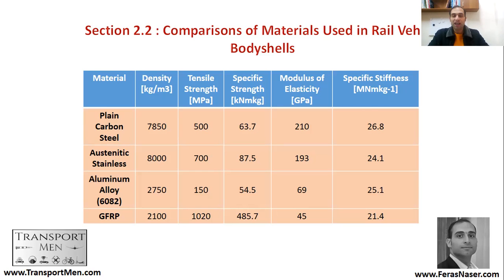We don't choose material only based on lightweight and strength — we also consider cost and ease of fabrication. For specific strength and modulus of elasticity: steel is 210, austenitic steel is 193, aluminium alloy is 69, and glass fiber reinforced polymer is 45. Specific stiffness is also one of the characteristics you look at for any material that will make your body shell.